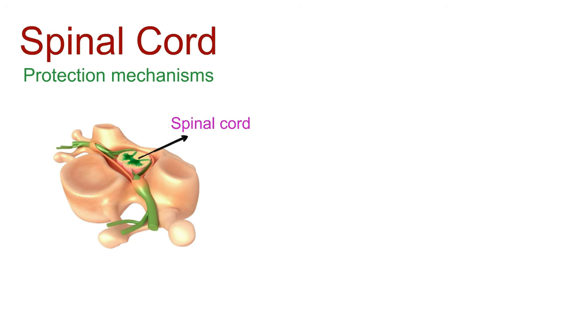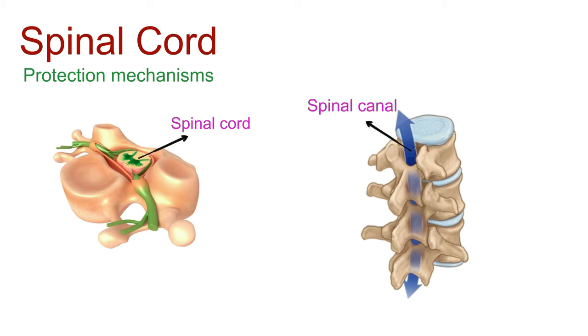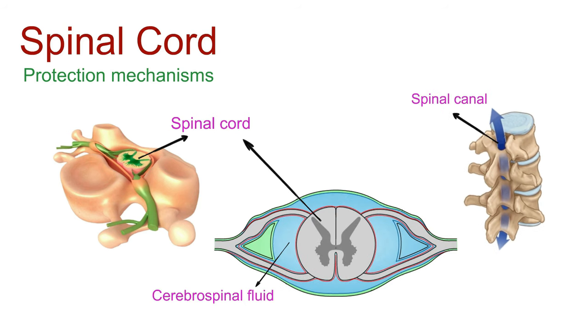Enveloping the spinal cord is the spinal canal, a protective channel formed by openings in the vertebrae. But that's not all. Cerebrospinal fluid, a liquid buffer, circulates around the spinal cord, adding an extra layer of defense.